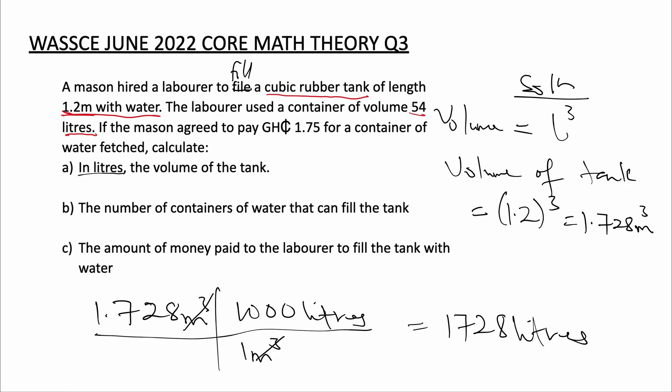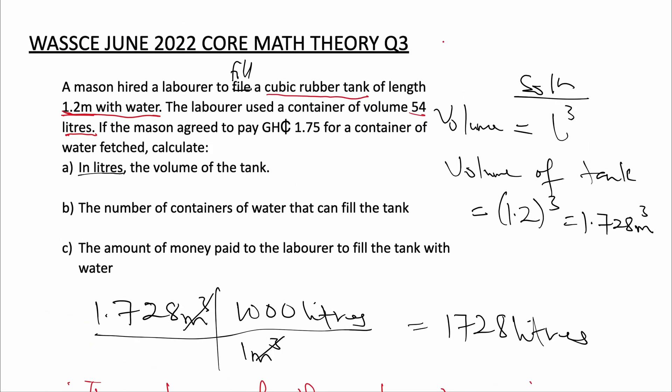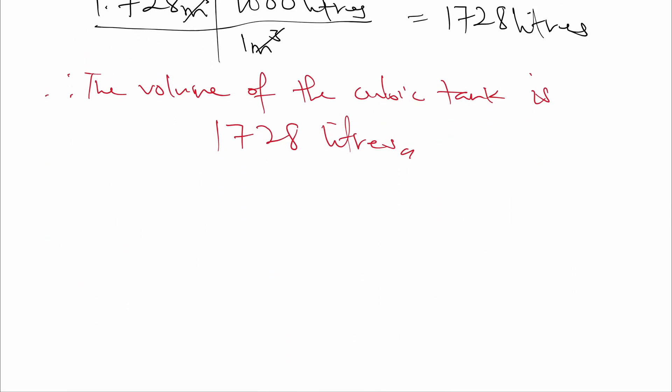Therefore, the volume of the cubic tank is 1,728 liters. Now B says, find the number of containers of water that can fill the tank. And we know that the laborer is using 54 liters. So how many of 54 liters is equal to 1,728?